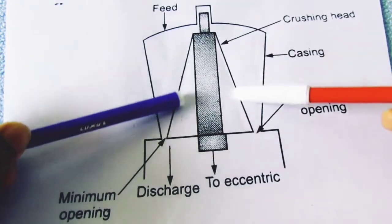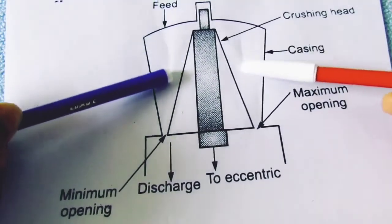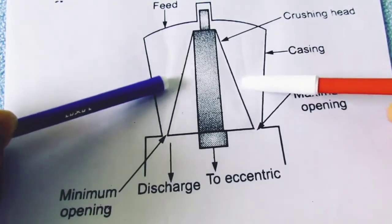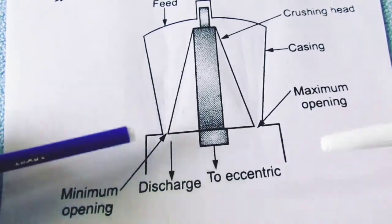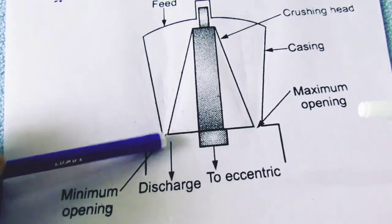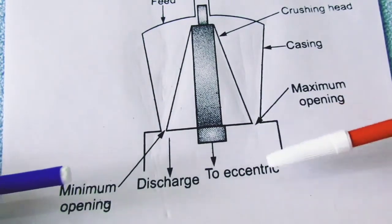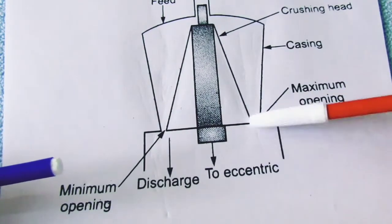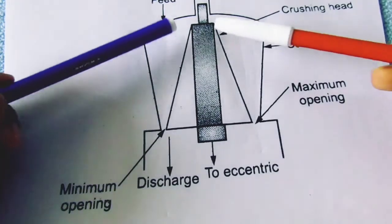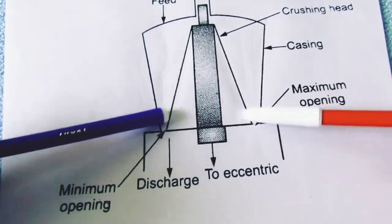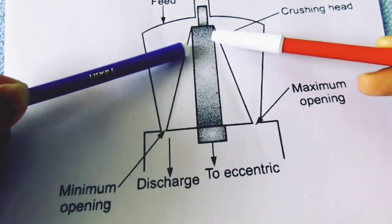This is the V-shape. The solid will come here. The compression will go down — the minimum size will be discharged and the maximum size will come here. So this is the crushing head. This is the main important part.